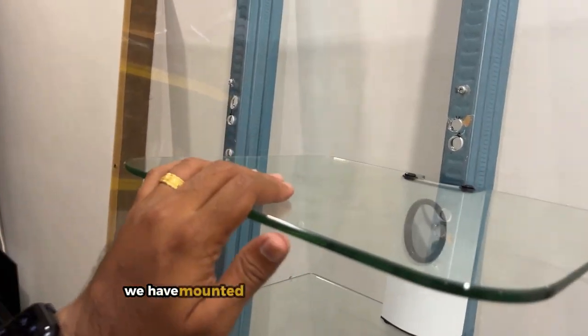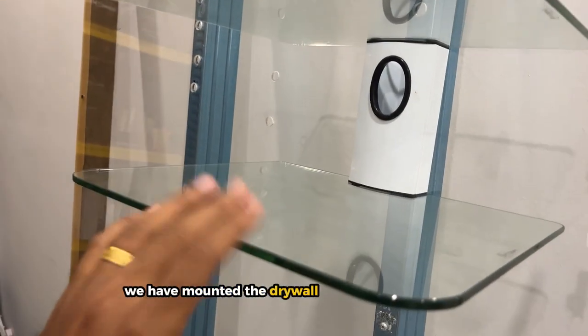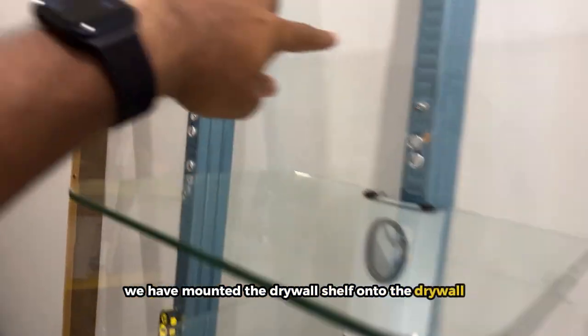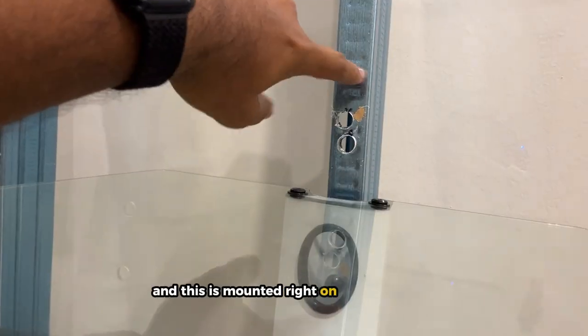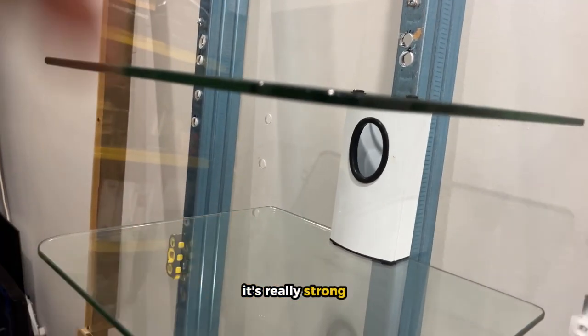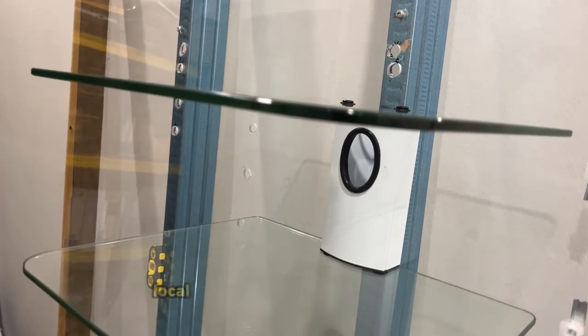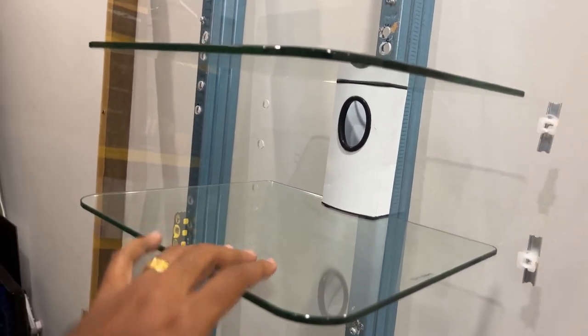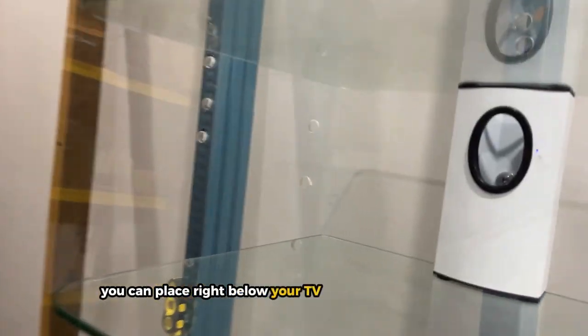There you go, we have mounted the drywall shelf onto the drywall and this is mounted right on the metal stud. It's a tempered glass shelf, it's really strong, and you can place your entertainment unit, cable box, or anything else on these shelves.